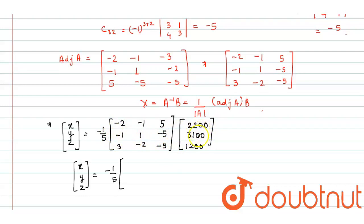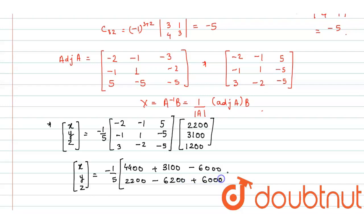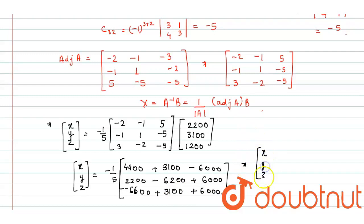Multiplying: we get entries 4400 plus 3100 minus 6000; next, 2200 minus 6200 plus 6000; next, minus 6600 plus 3100 plus 6000. So on calculating and dividing by 5, XYZ comes to 300, 400 and 500.